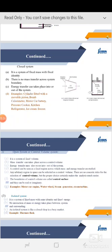The open system, or control volume system, is a system of fixed volume — the volume cannot be altered. Mass transfer can take place across the control volume, and energy transfer may also occur in and out of the system. A control volume can be seen as a fixed region across which mass and energy transfer are studied. The boundaries of a control volume are called the control surface, and they can be real or imaginary. Examples of open systems are motor car engines, water wheels, steam generators, and steam turbines.